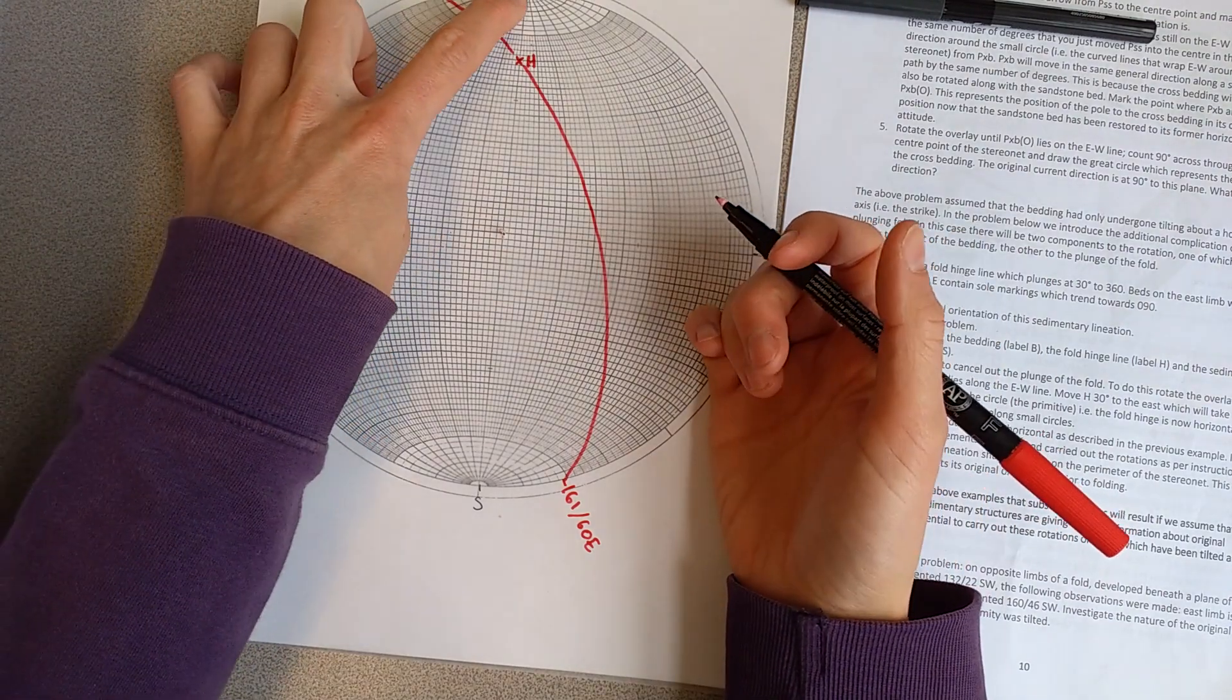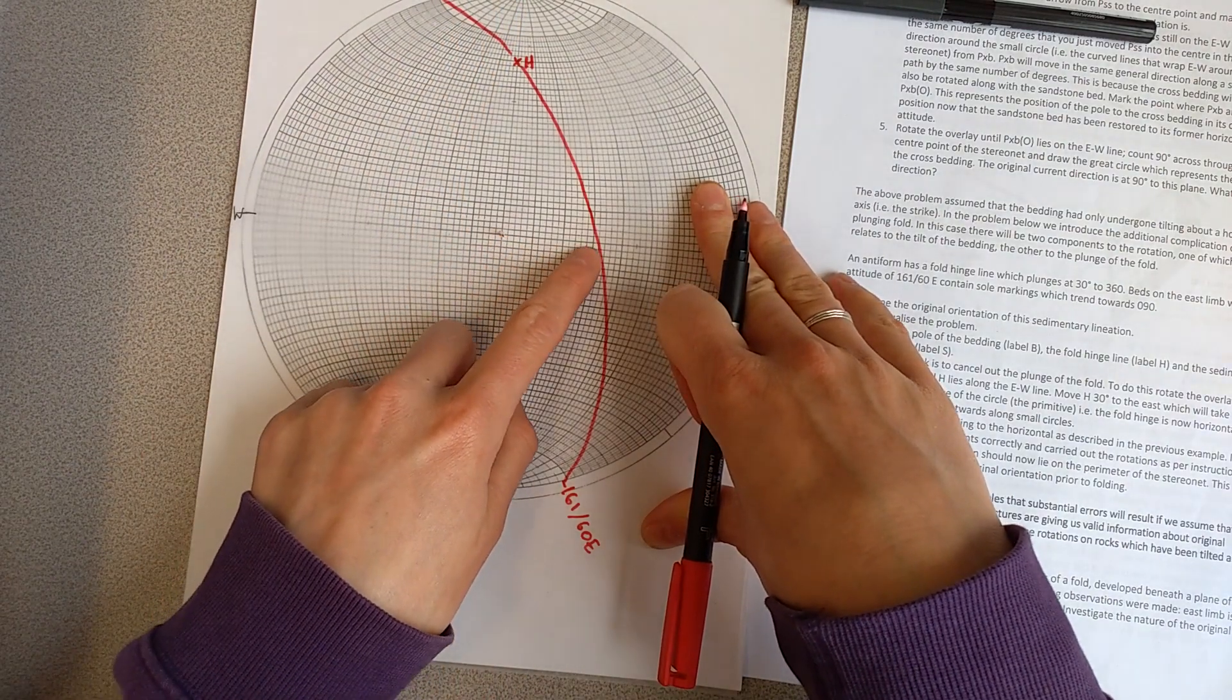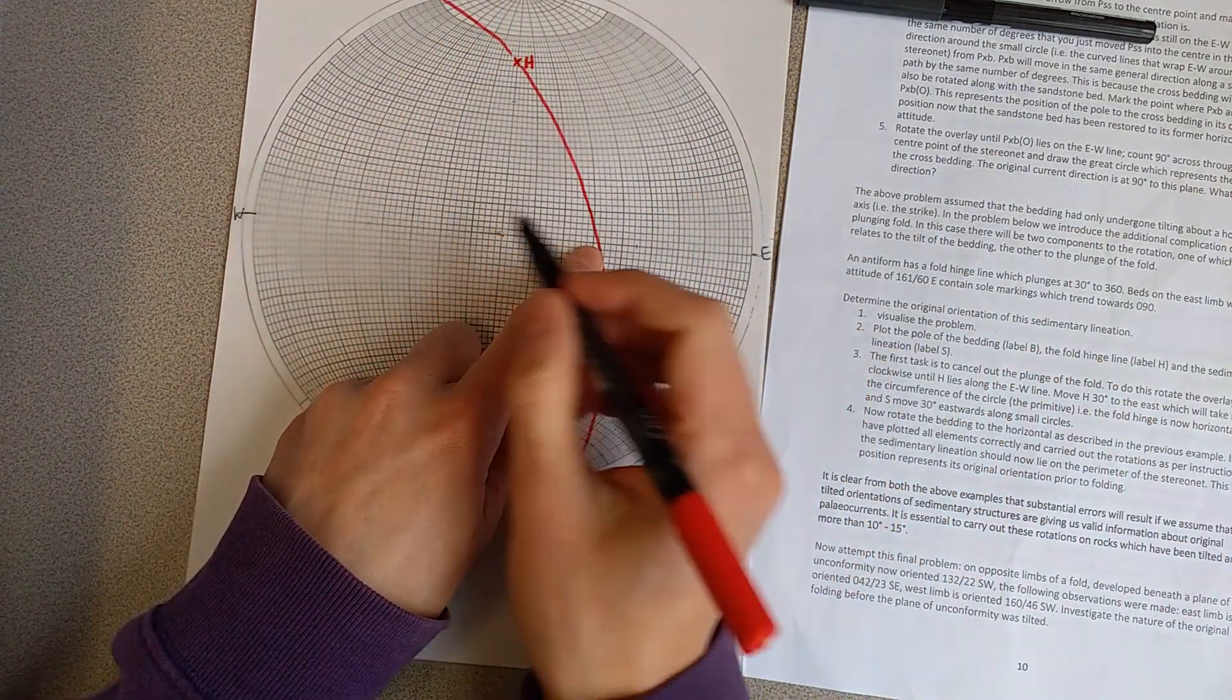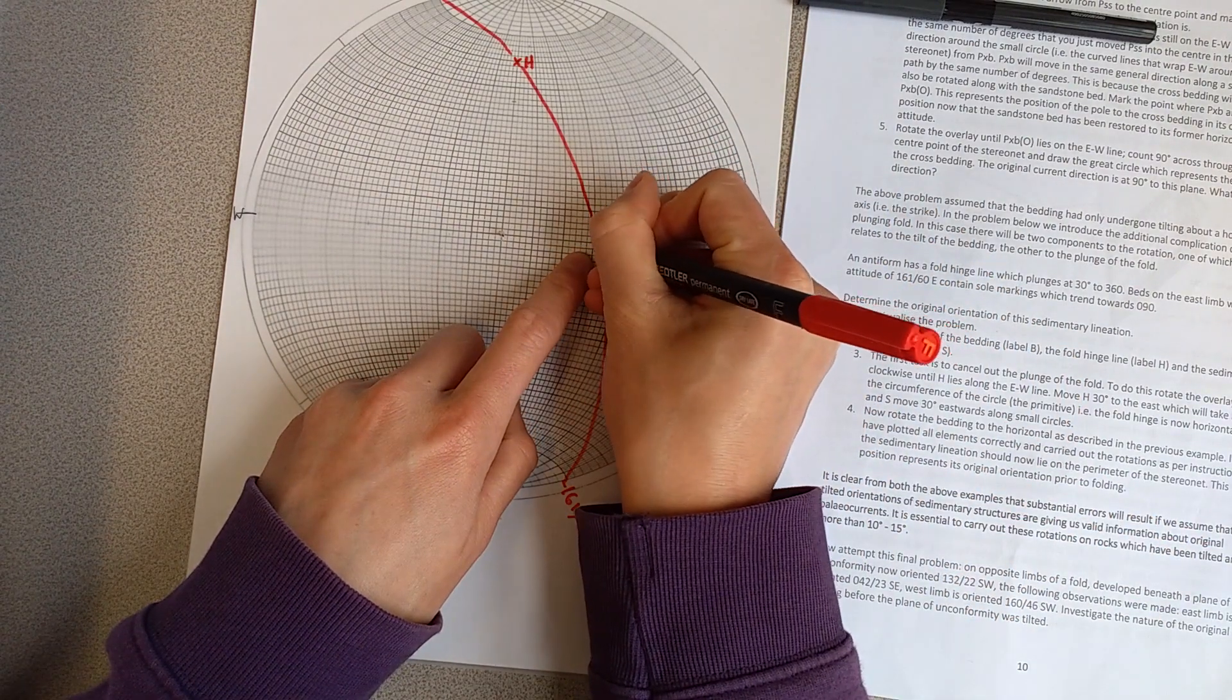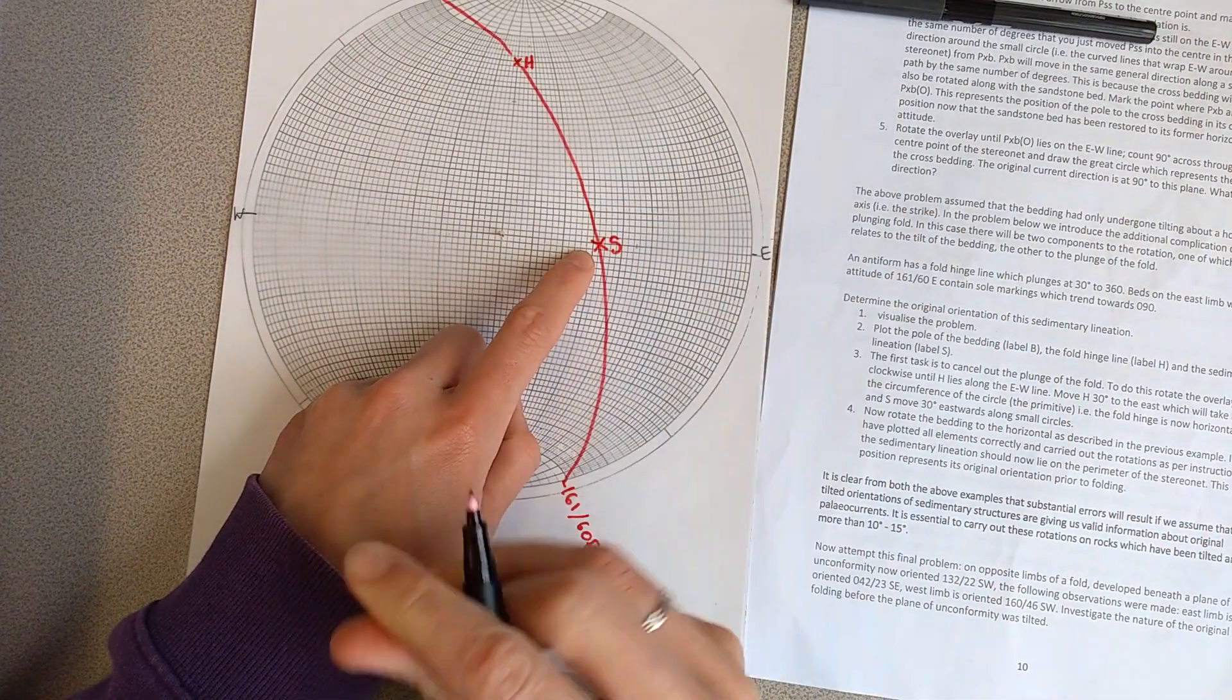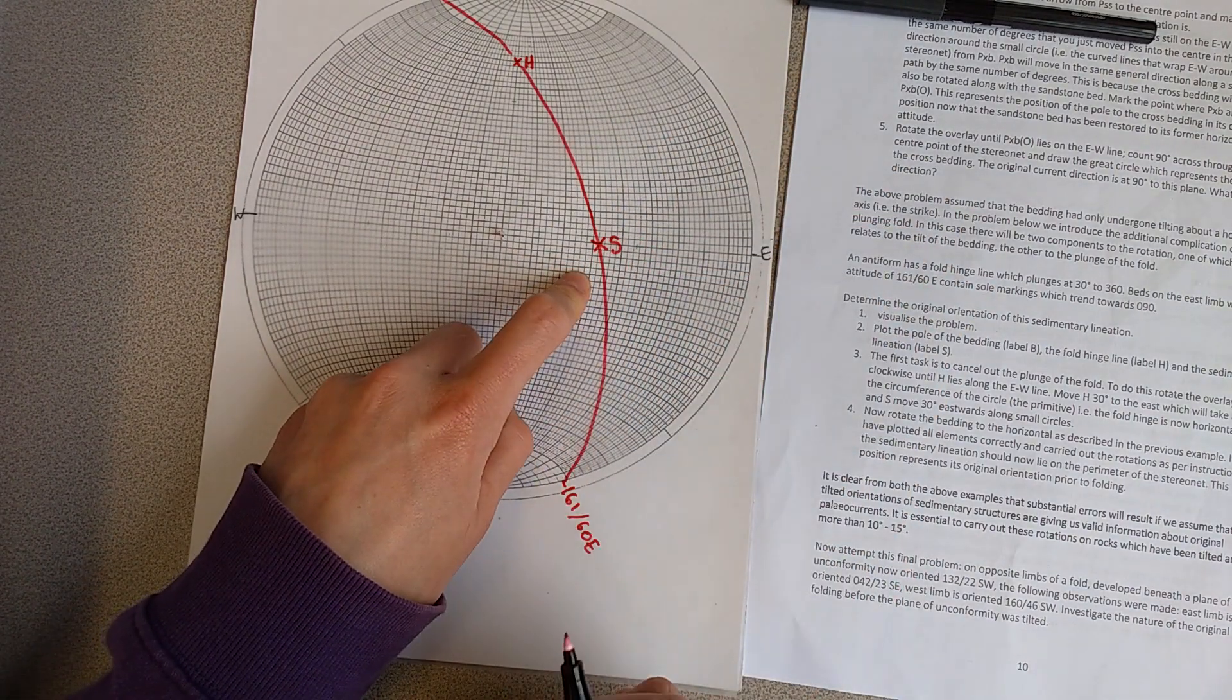So with the stereo net back restored to north at the top, what we can do is on this line, on the east-west line, because this is 090 here, we can put a pitch mark for the sole markings, which I'm just putting as S, on our eastern limb.